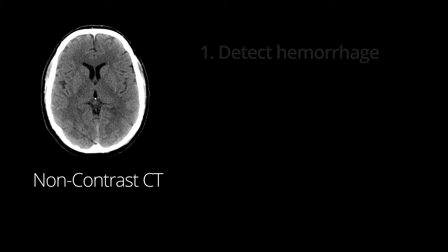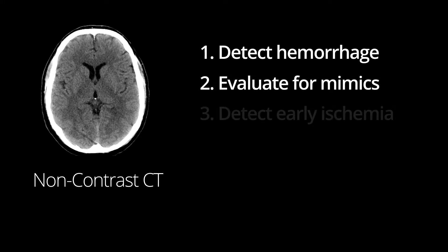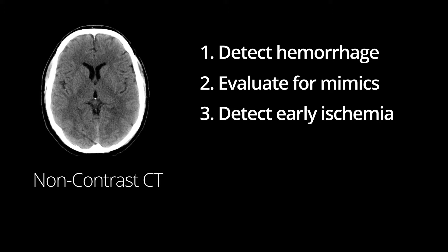Non-contrast CT has three main roles in stroke imaging. The first is to detect any hemorrhage, which would preclude a patient from thrombolysis. The second is to evaluate for any other possible mimics that could be causing the patient's neurological deficits. The third is to detect any signs of early ischemia. On CT, 60% of infarcts are seen within 3 to 6 hours, and virtually all are seen within 24 hours.